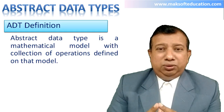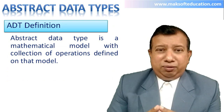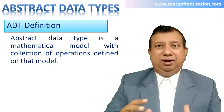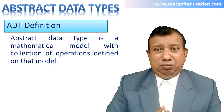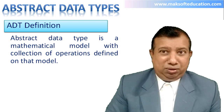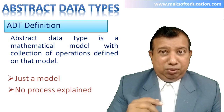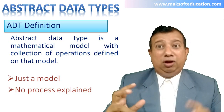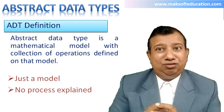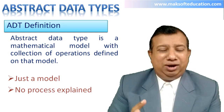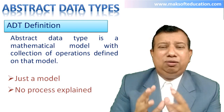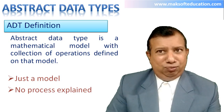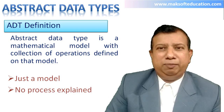From the definition it is clear: abstract data type is just a model. Two things we have to remember — number one, it is a model, and number two, it doesn't explain any process: how it stores data, how the operations are carried out — that is not specified. That is why it is called abstract data type; it is not fully fleshed out, it is just a model.